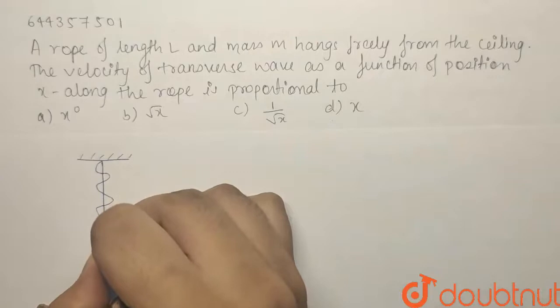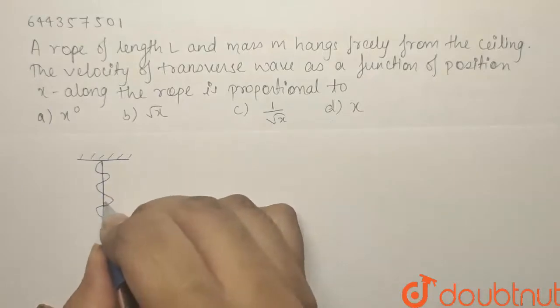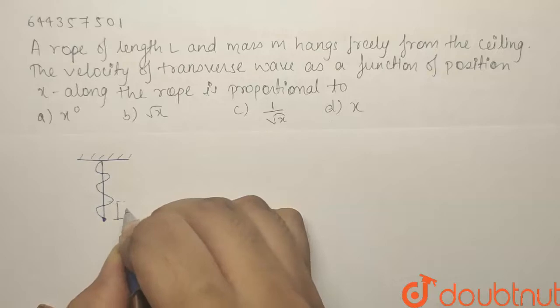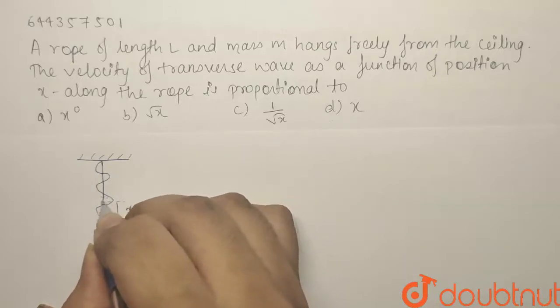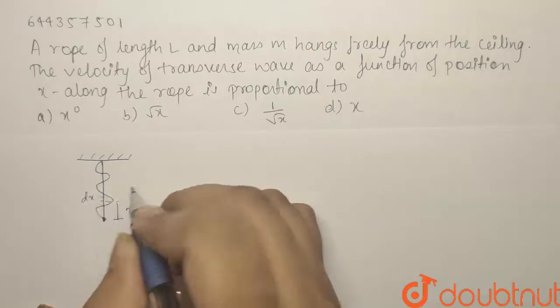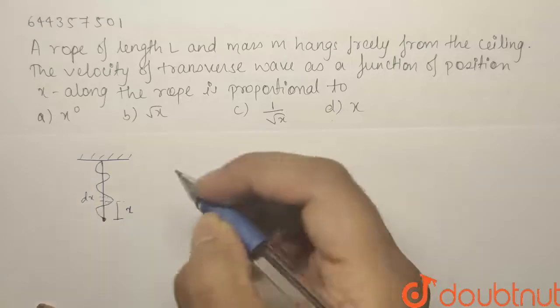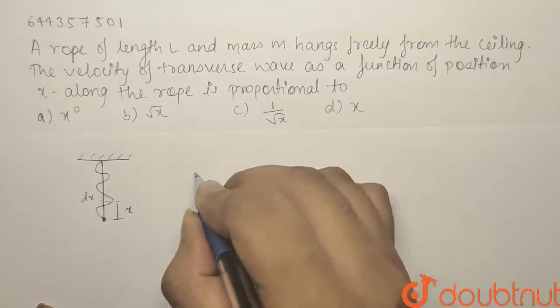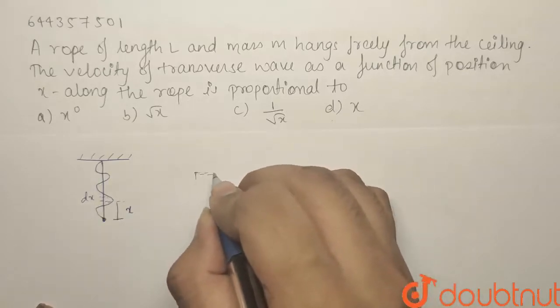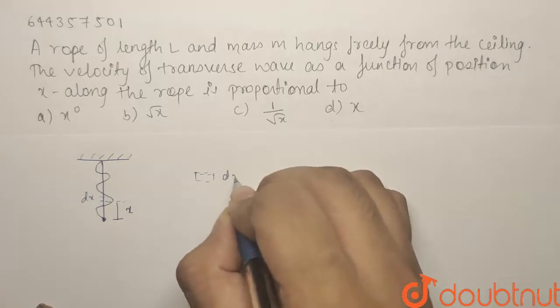Now, if this is our rope at a distance x from the bottom, if we take an element of dx, what will be the tension on this dx? So if we make this dx in a bigger view, bigger POV. So what will we have? If this is the dx element,